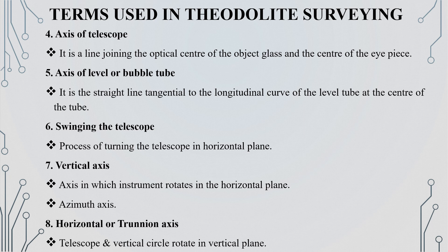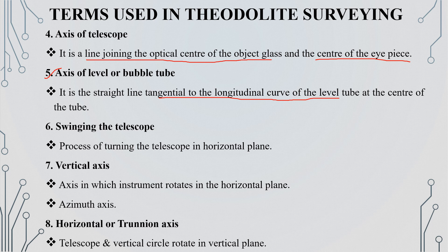The next one is the axis of telescope — the line joining the optical center of the object glass and the center of the eyepiece. The axis of the level, or bubble tube axis, is the straight line tangential to the longitudinal curve of the level tube at the center of the tube.